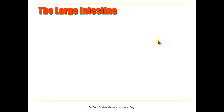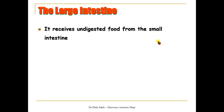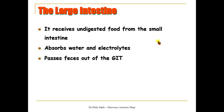The function of the large intestine is to receive undigested food from the small intestine, absorb water and electrolytes from it, and transform it into a solid material called faeces or faecal material. This is then passed out of the GIT in the process called defecation.